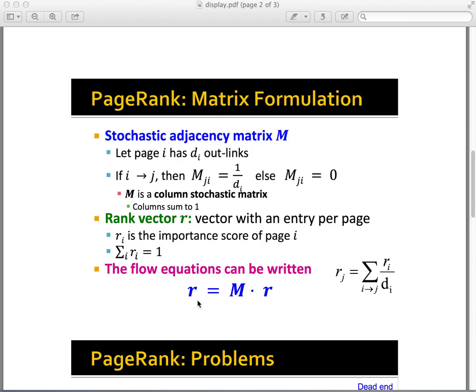The power iteration method is as follows. First, we initialize the rank vector r with each element to be 1 over n. Then we use the flow equation to update r until there is little change with r or we get the number of iterations required.